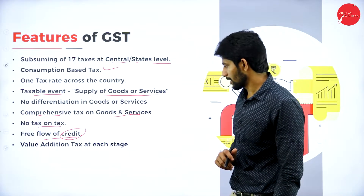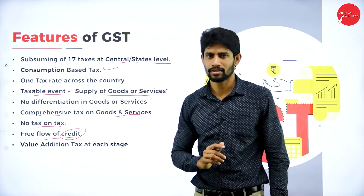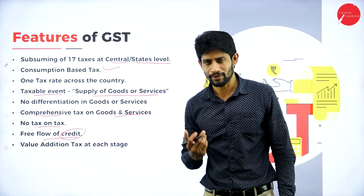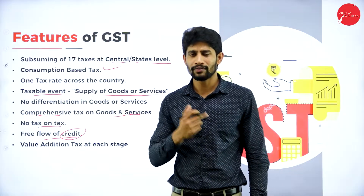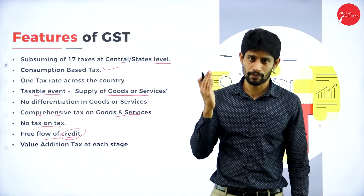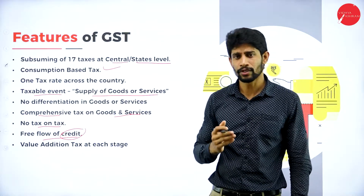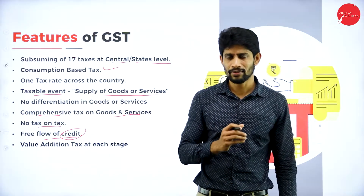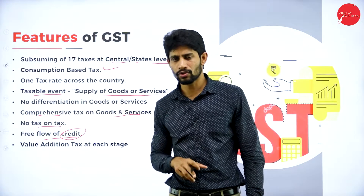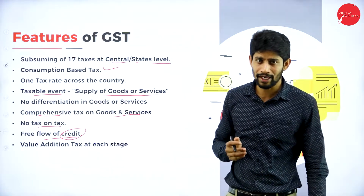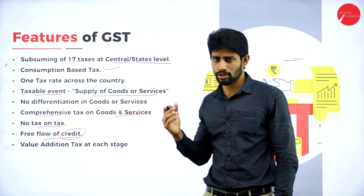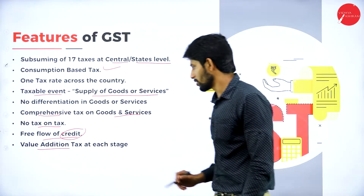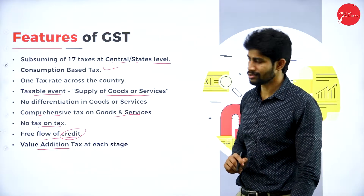Value addition tax at each stage: at each stage you add some value. For example, you purchase raw material and convert it into semi-finished goods, spending some amount — that is value addition. Then semi-finished goods are converted into finished goods, adding more value. At each and every process you are adding some value — that is called value addition tax at each stage.